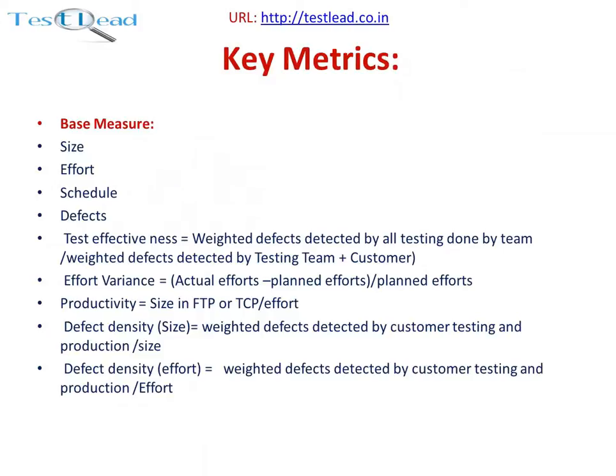Productivity equals size in function points divided by effort. Defect density by size equals weighted defects detected by customer testing and production, divided by size. Defect density by effort equals weighted defects detected by customer testing and production, divided by effort.